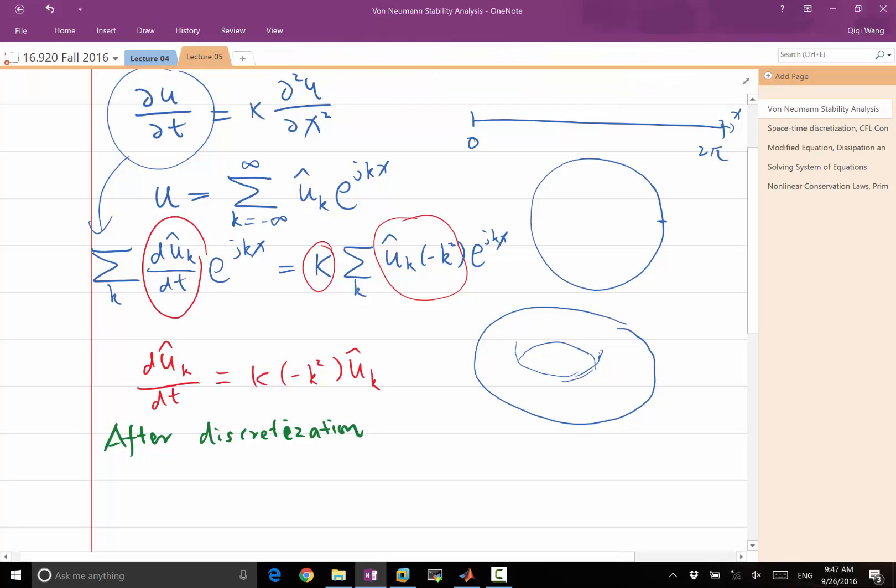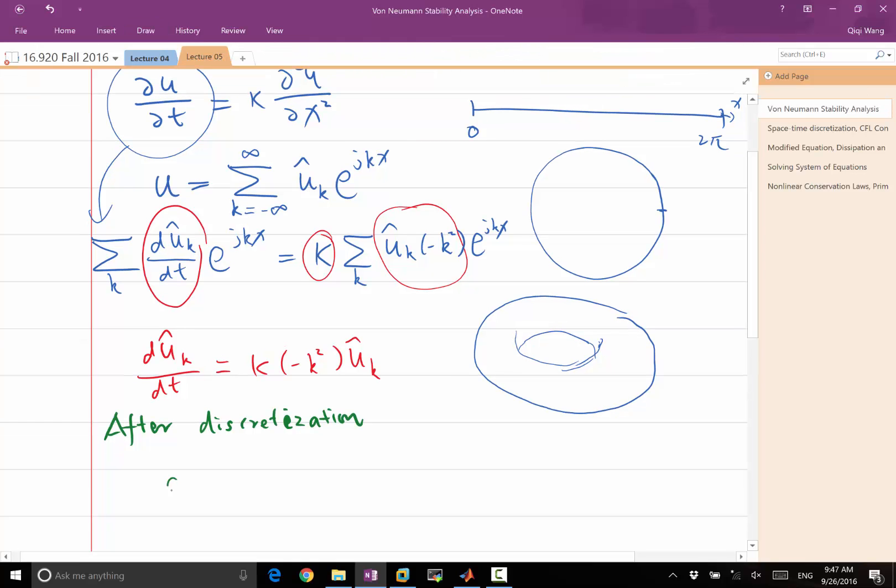We have the finite difference approximation, which is dui/dt equal to kappa times (ui+1 + ui-1 - 2ui) divided by delta x squared.